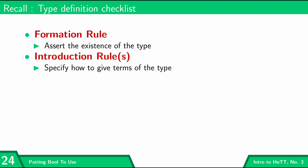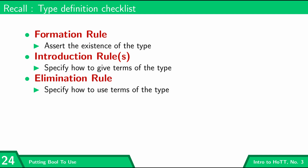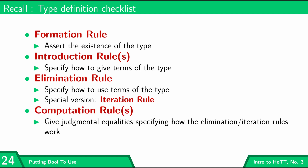You may remember I had a type definition checklist of all the things we need to do to define a new type. The first ones were the formation rule and the introduction rule, which assert the existence of the type and specify how to introduce new terms of the type. The next one is called the elimination rule. We don't have all the tools we need to talk about elimination rules in general — in particular we're going to need dependent types — so instead we're doing a special version called the iteration rule. What the iteration rule and eventually the elimination rule do is specify how to use the terms of this type.